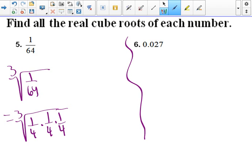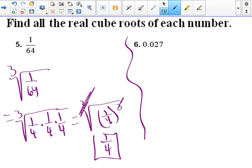All right, because 4 times 4 is 16. 16 times 4 is 64. So those cancel out. Let's rewrite it as 1 fourth cubed first. And then these cancel out to 1 fourth. And that's your answer.